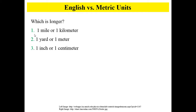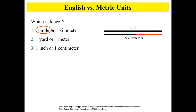So which is longer, one mile or one kilometer? If you said one mile, you'd be correct. This line over here represents a mile, and you can see that one kilometer stops right there. It takes 1.6 kilometers to make a mile.